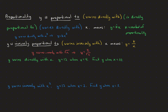Let's see what kind of problems we might solve. If y varies directly with x, that means y is going to be k times x. And we know y is 12 when x is 4, so 12 equals k times 4. Dividing by 4, k — the constant of proportionality — is 3. So our equation becomes y equals 3 times x. Then to find y when x is 10: y equals 3 times 10, so y equals 30.